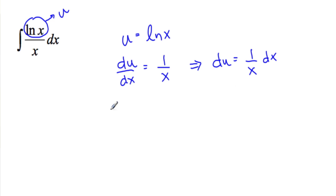and now I can substitute for everything. So I have the integral of u, which is ln x, and du. This is all du. Well, the integral of u to the 1 power is equal to 1 half u squared plus c.